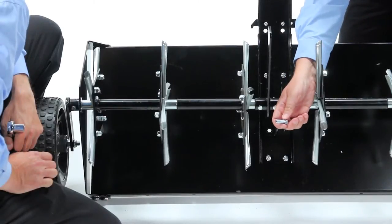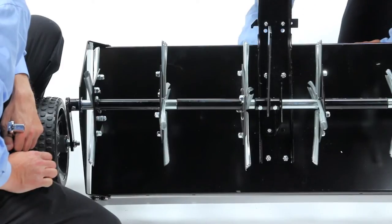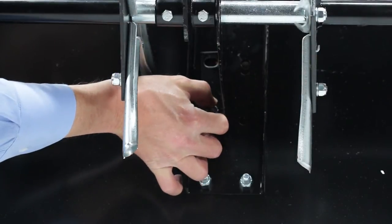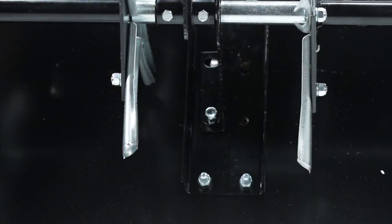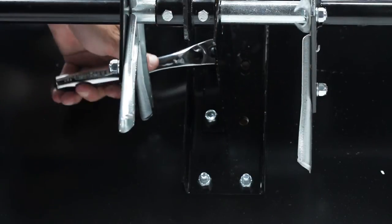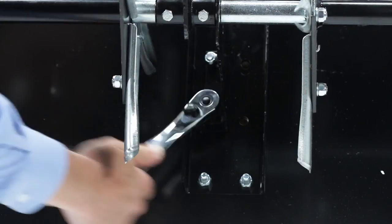Secure the middle brace by inserting two hex bolts part D through the top of the tray through the tongue and fasten with two three-eighths inch by one inch hex bolts part D and three-eighths inch nylock nuts part I from the bottom. Do not fully tighten these bolts at this time.